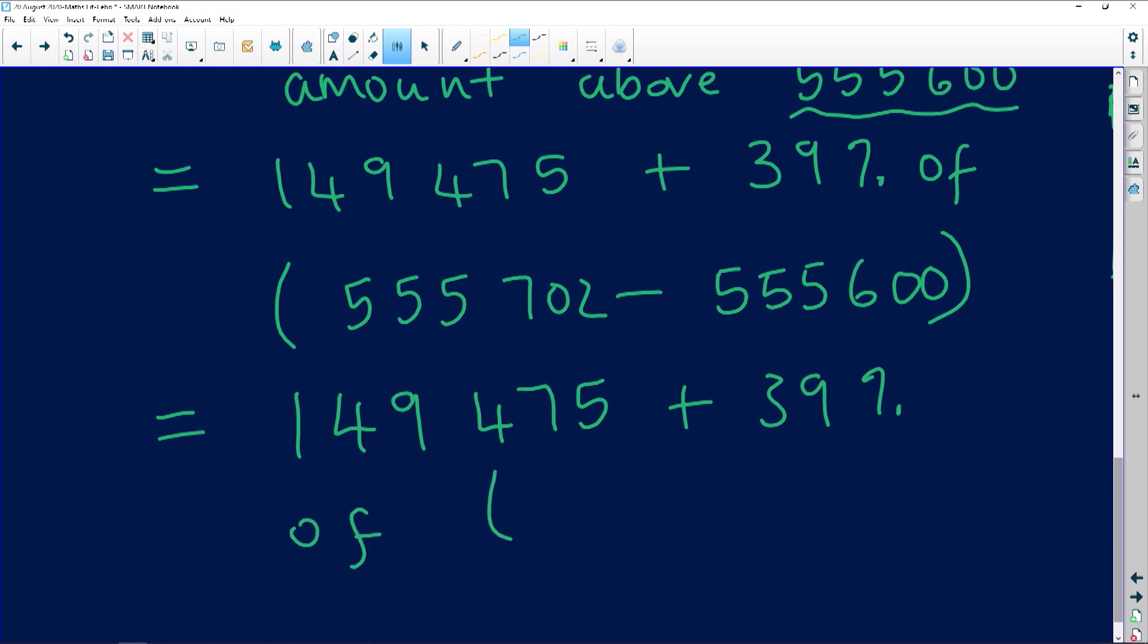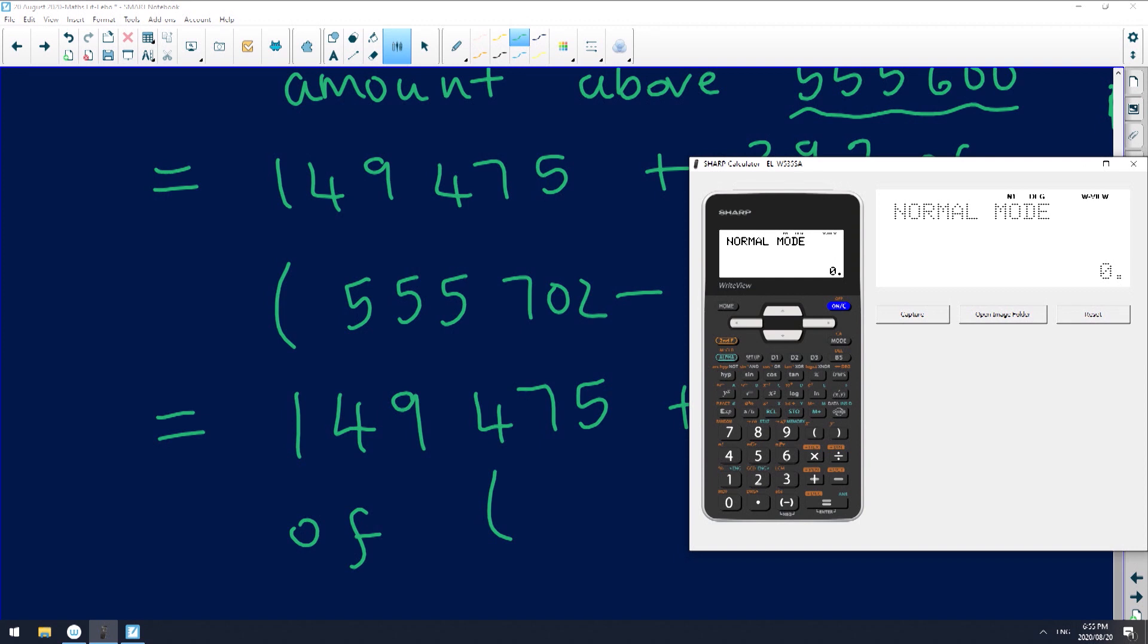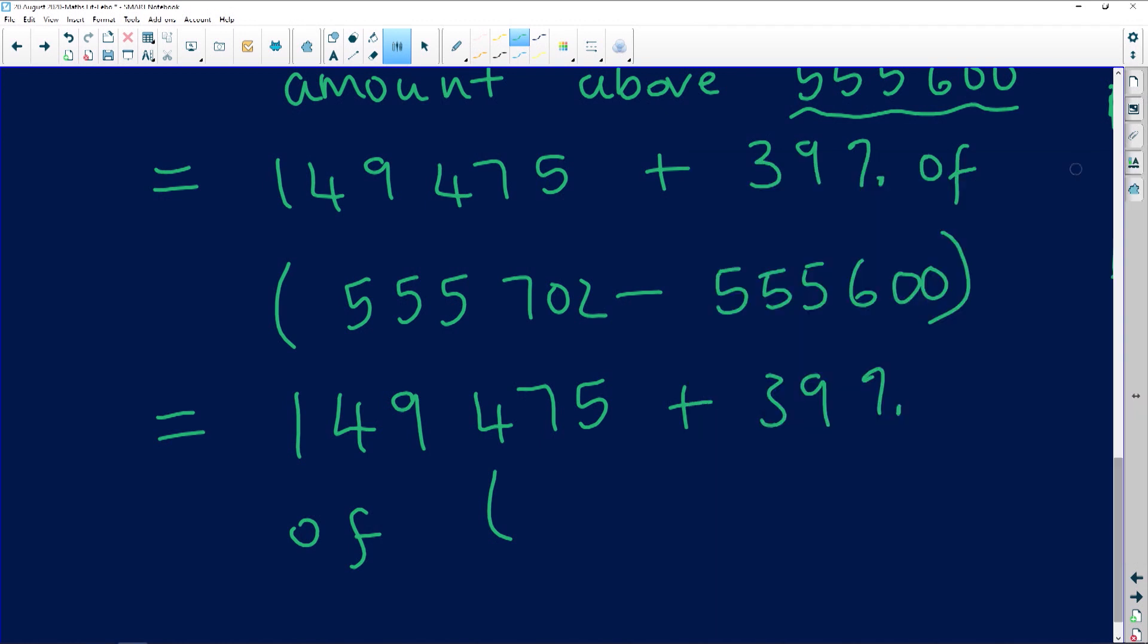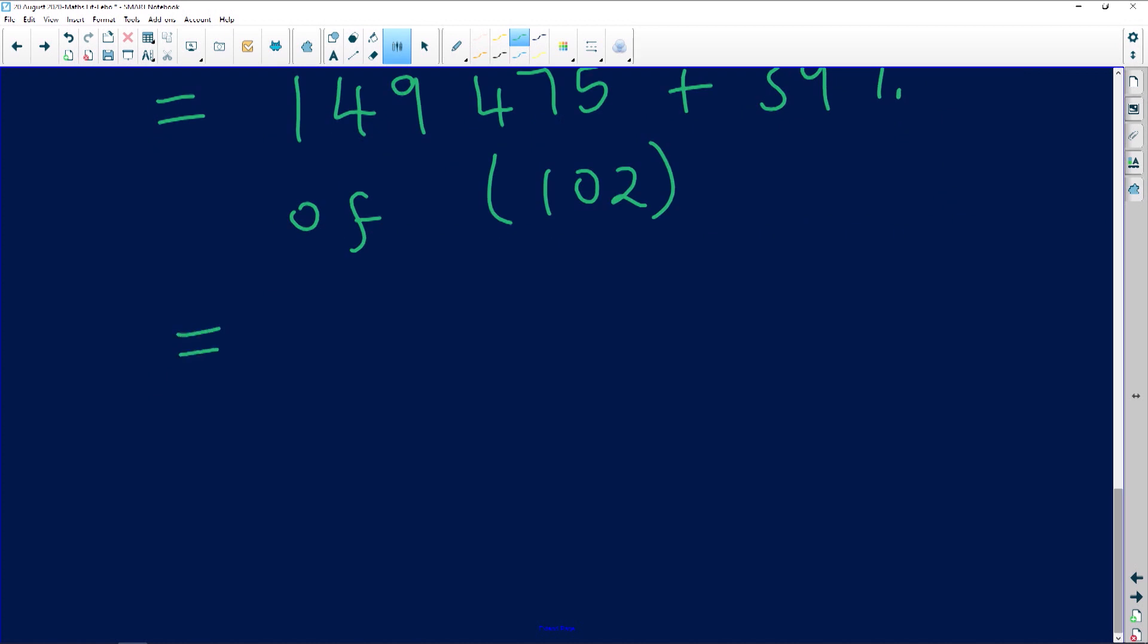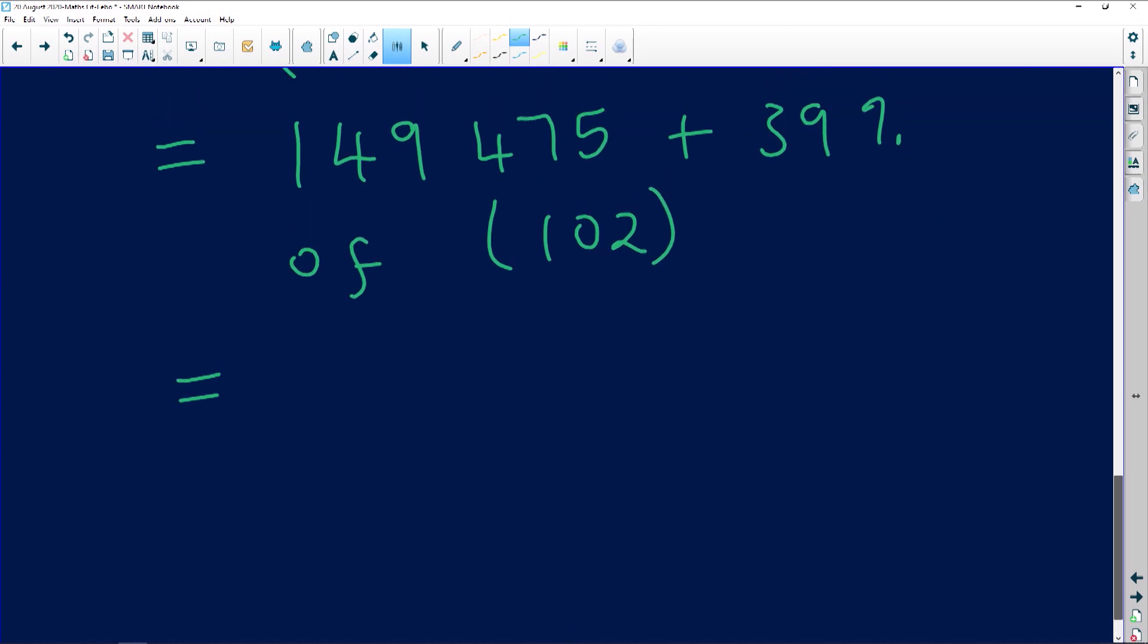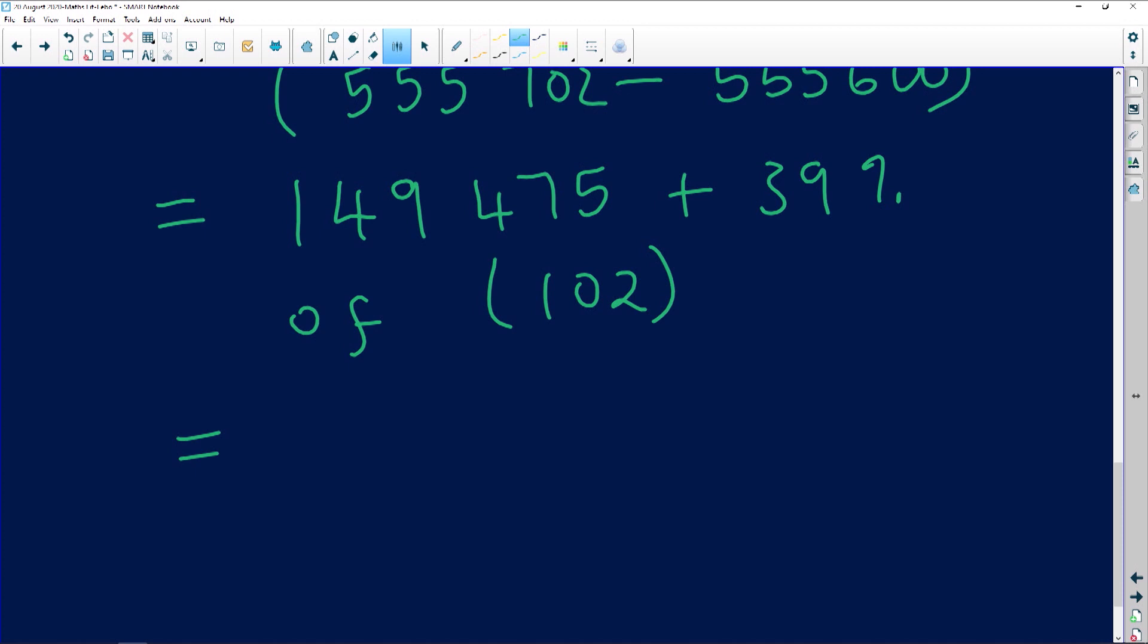Of the difference. And the difference there is going to be R555,702 minus R555,600, which equals R102. So it's 39% of R102. So you're going to find whatever the answer for that is going to be, and then you are going to, so what is 39% of that, okay.